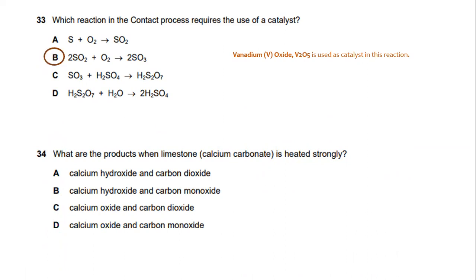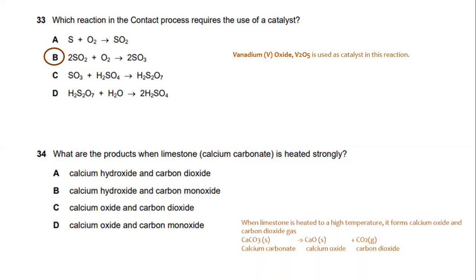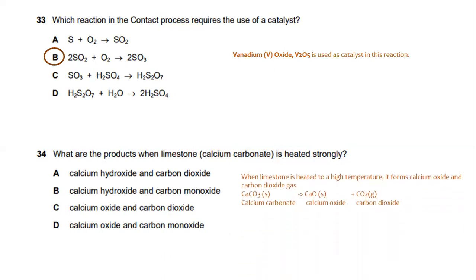What are the products when limestone or calcium carbonate is heated strongly? When limestone is heated to high temperature, it forms calcium oxide and carbon dioxide. The answer is C.